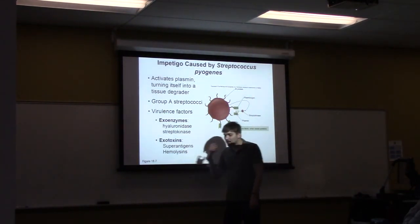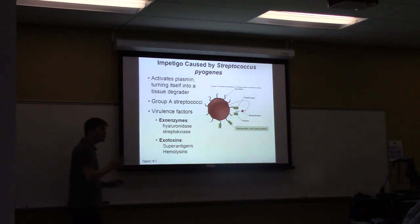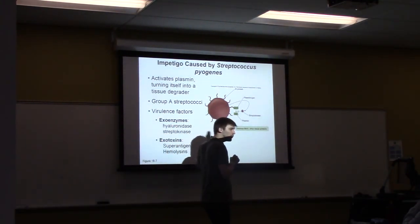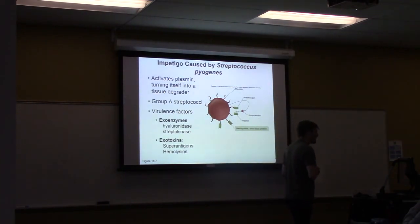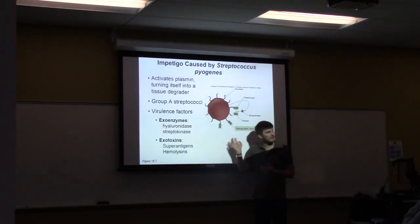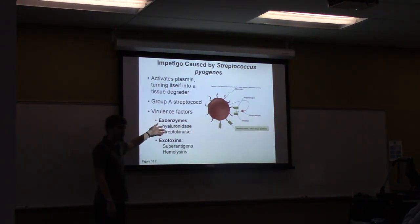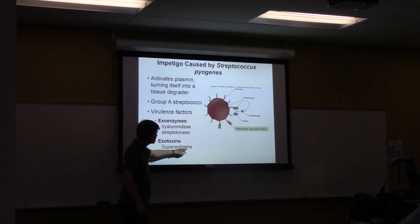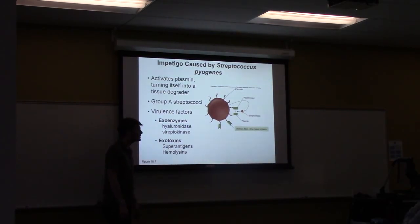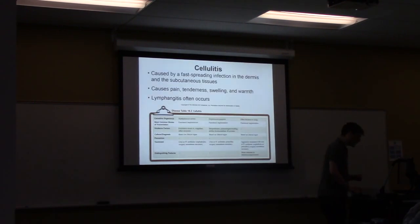Streptococcus pyogenes is the other organism that causes many bacterial skin infections. It's also notorious for causing sore throat — it's the causative organism of strep throat. It's somewhat milder compared to S. aureus, so if you had to choose, this would be the one you'd want. It produces exoenzymes like hyaluronidase and streptokinase, as well as exotoxins including a superantigen similar to toxic shock toxin but less powerful, and hemolysins.